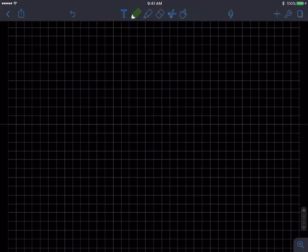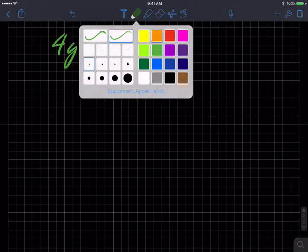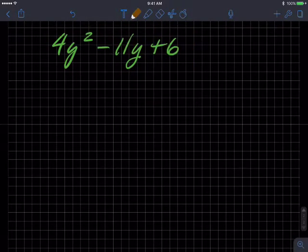Now what if we have something like this: 4y squared minus 11y plus 6. You should pause and think about what's different between this one and that one. Note that this has a coefficient in front of the first squared term, the highest degree term. That causes problems because now the numbers don't interact the same way.